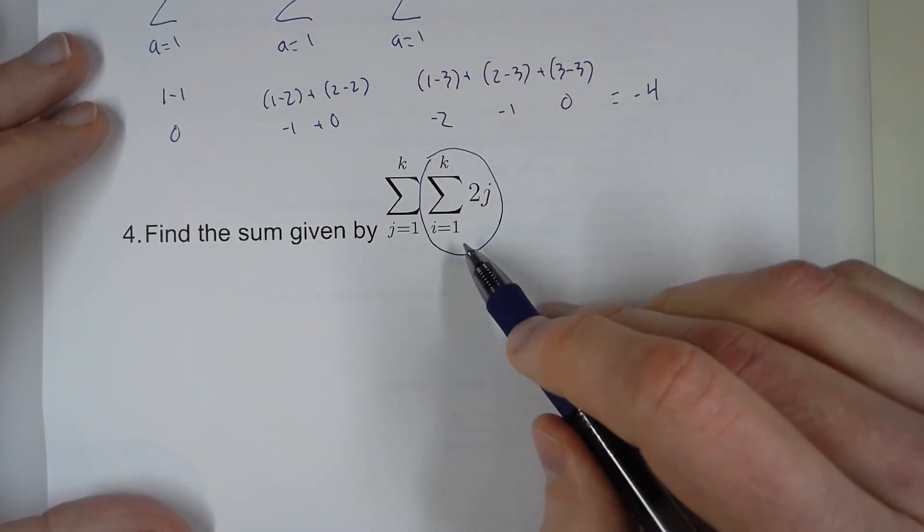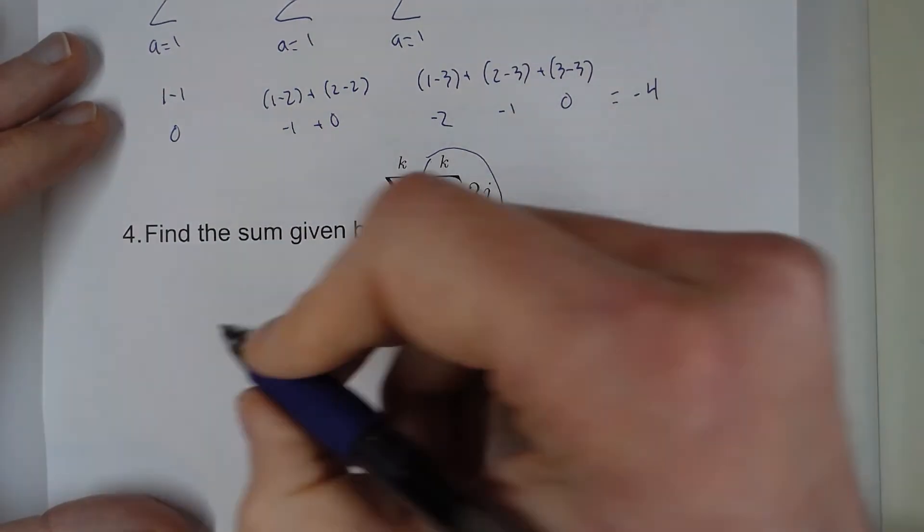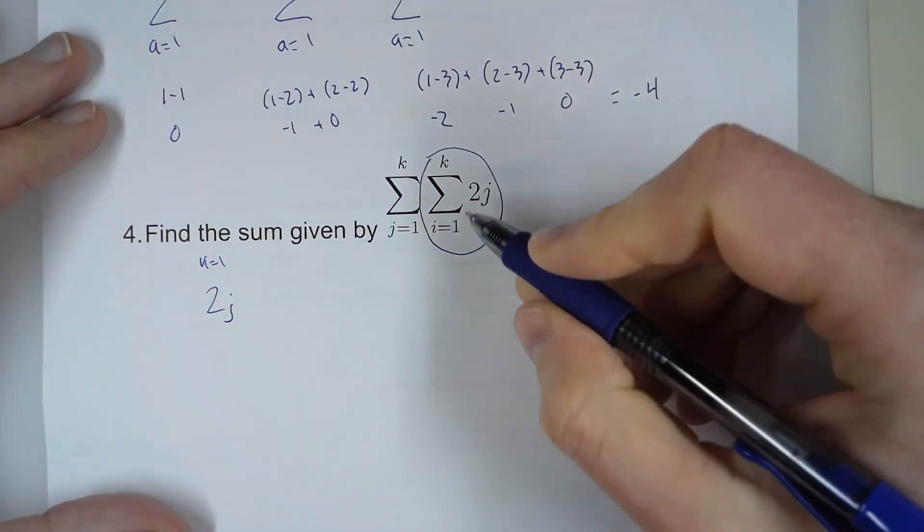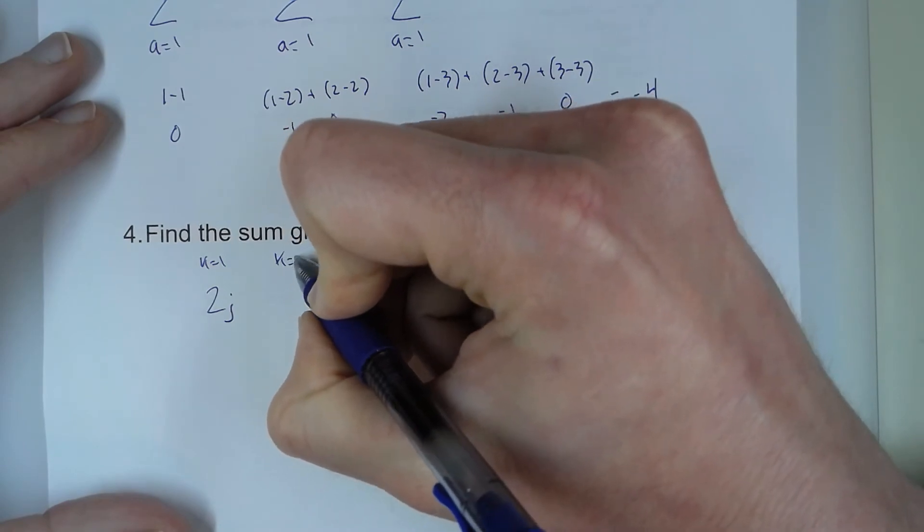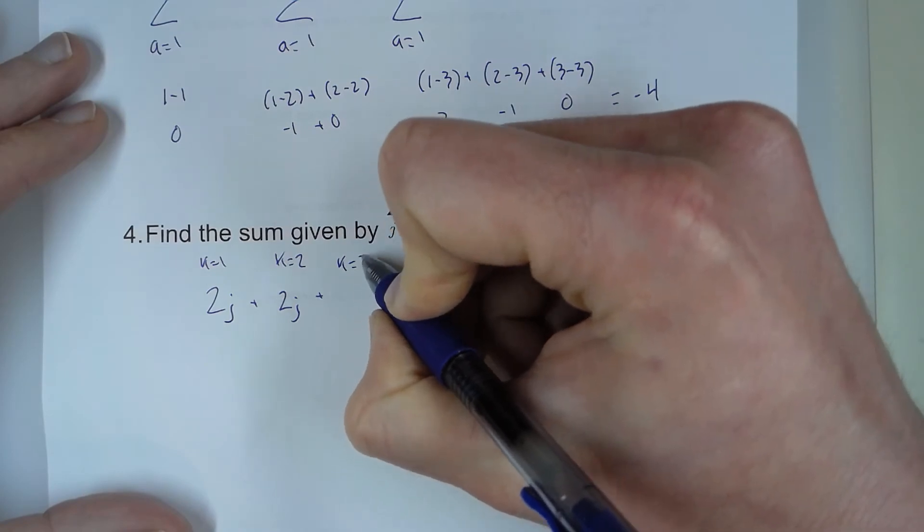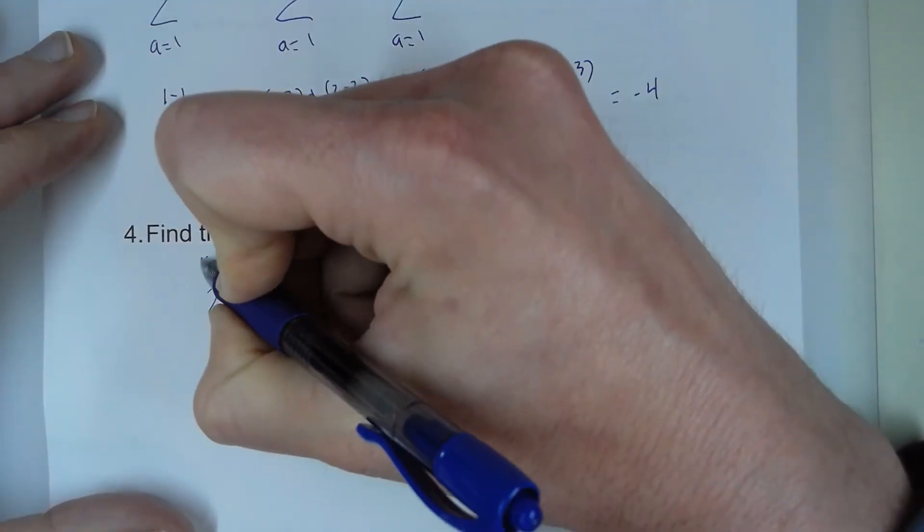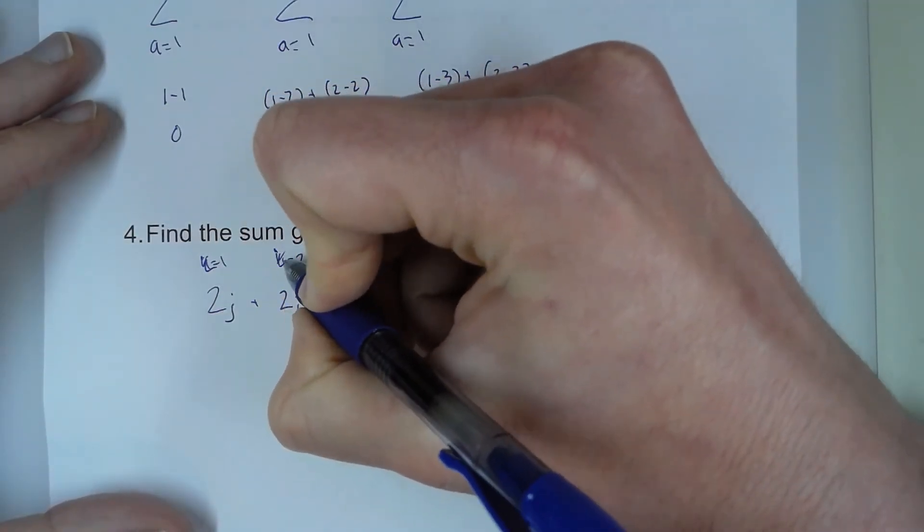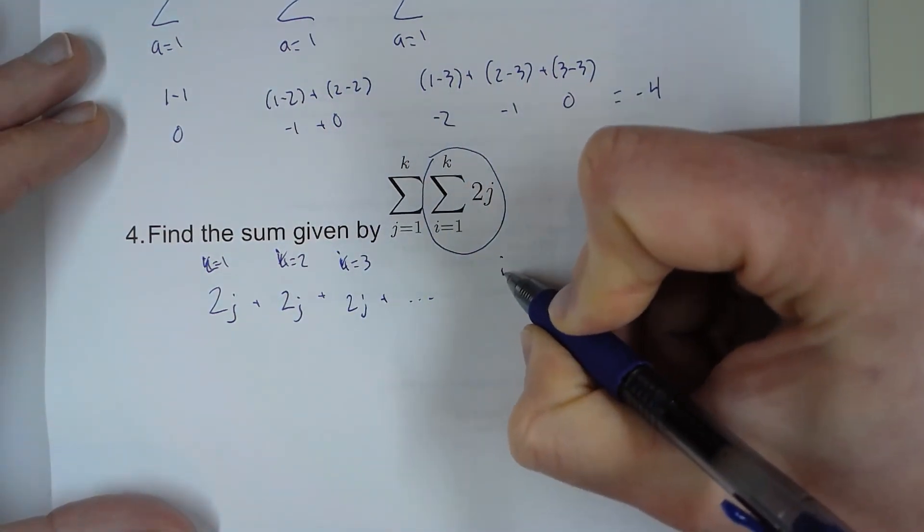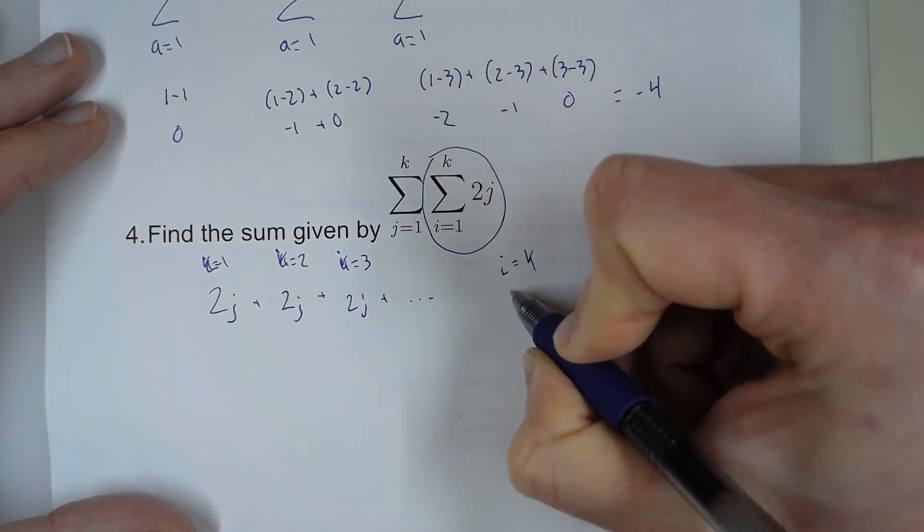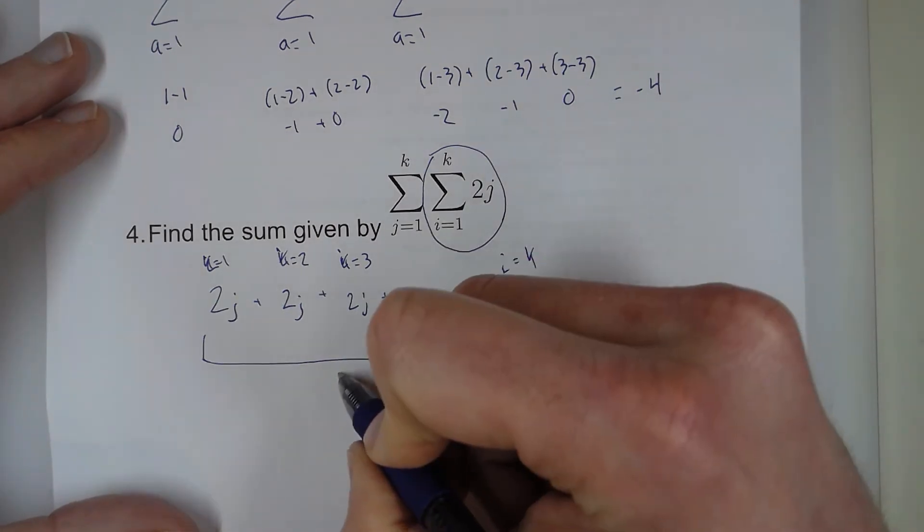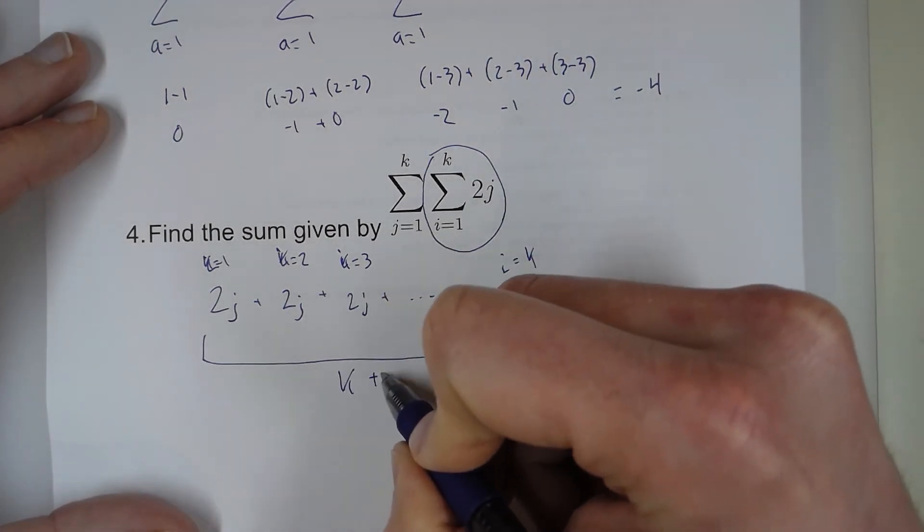So I'm going to plug in 1 in for i, but there is no i. So that means it's just 2j when k equals 1. And then when k equals 2, I also get 2j. And then when k equals 3, I get 2j. Now this is going to keep happening until we plug in k, whatever that number is. So this happens k times.